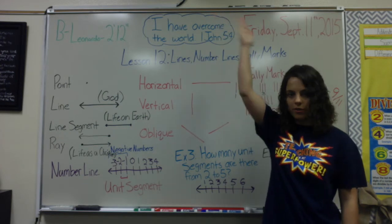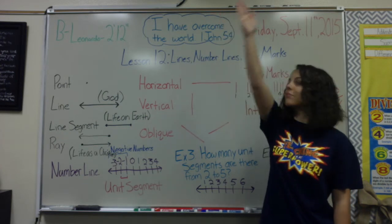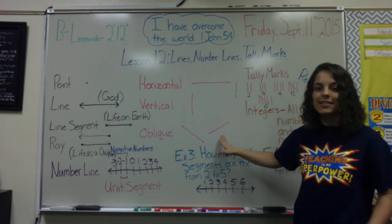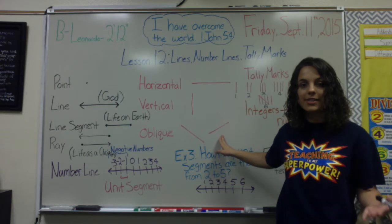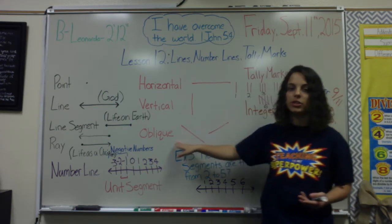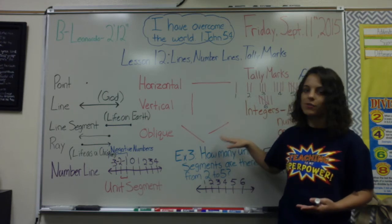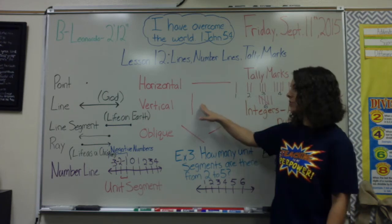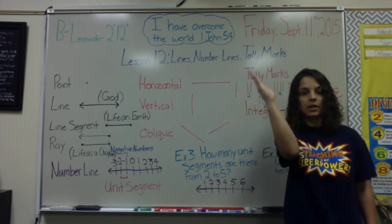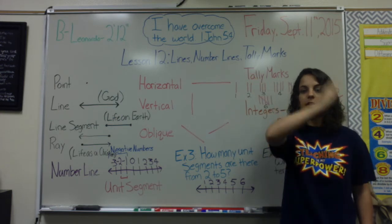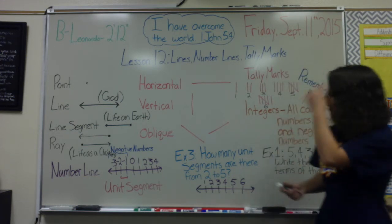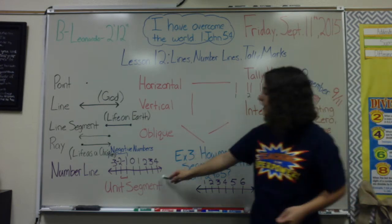We also have vertical, which is straight up and down. Then we have oblique. In common terms you might think of it as diagonal, but the correct vocabulary term is oblique. Oblique means facing any direction besides vertical or horizontal — it can go in any direction. If it's not completely horizontal or vertical, it is oblique.